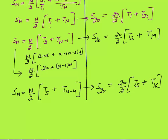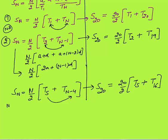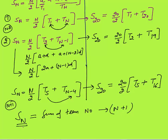There is a basic logic here: which term will add to which term. When you say t1 plus tn, the sum of the term numbers is n plus 1. Here term number is 1 and term number is n, so the sum is n plus 1. In the second case t2 plus tn minus 1: 2 plus n minus 1 is again n plus 1. And for t5 plus tn minus 4: 5 plus n minus 4 is also n plus 1. So whenever you are calculating the sum of first n terms, the sum of the two term numbers you pick should always equal n plus 1.